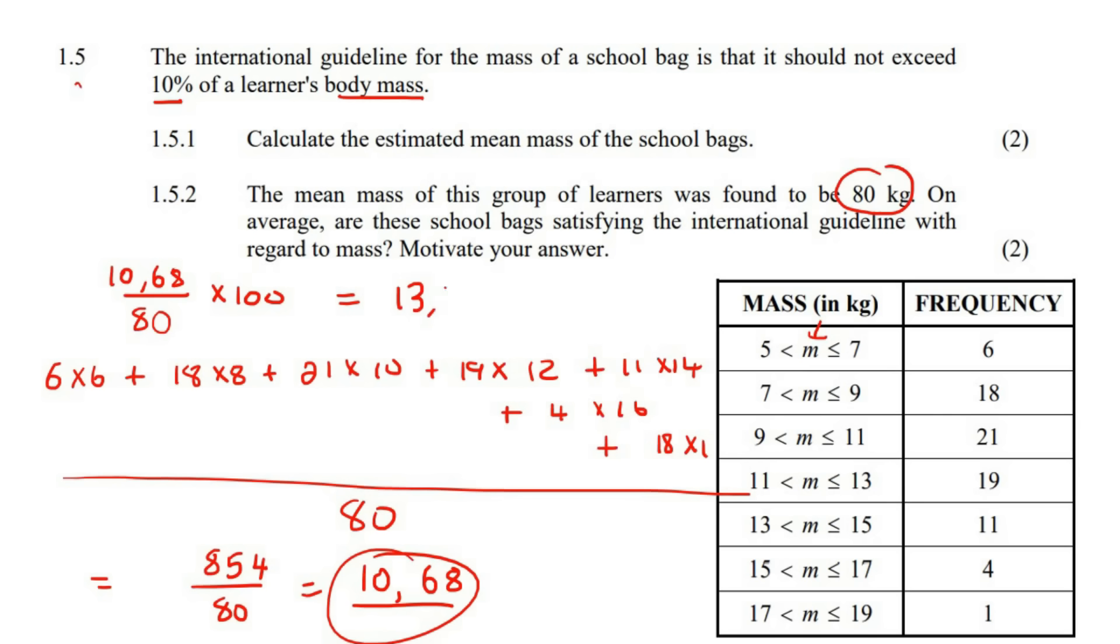So these learners, most of their bags are around 13.35%. So these poor learners, they're carrying around bags that are too heavy because the international guideline says that a school bag should not be 10% or more than 10% of a learner's mass. But these bags are on average 13.35% of a learner's mass. And so on average, are the school bags satisfying? So we'll say no, the school bags are not satisfying the guideline. So you'd obviously show the calculation and then you would give a conclusion.